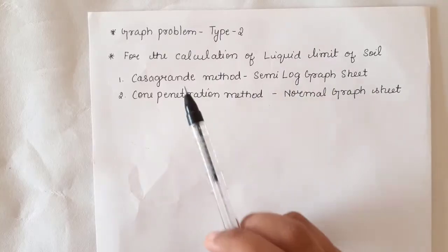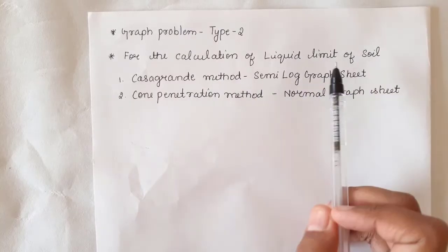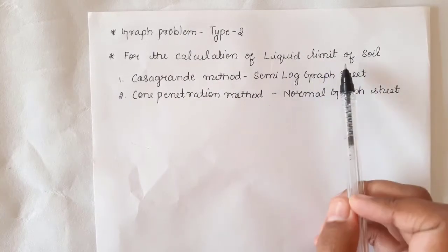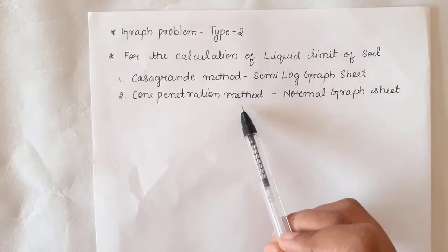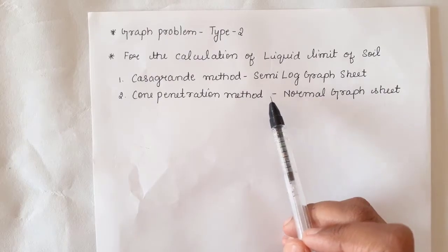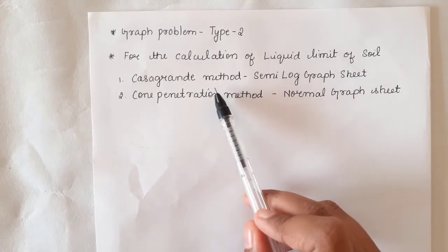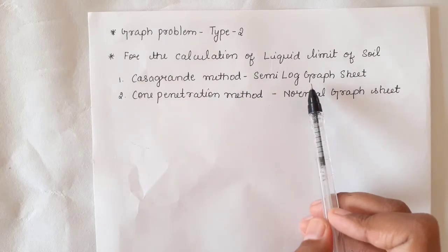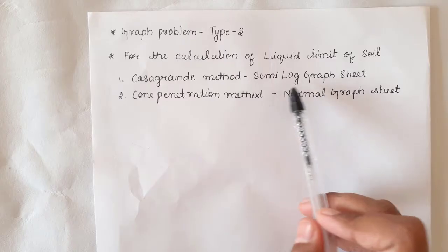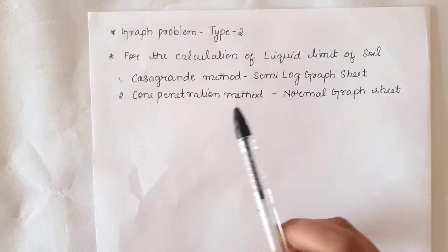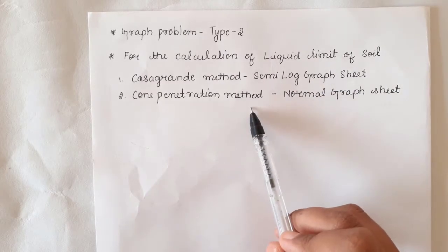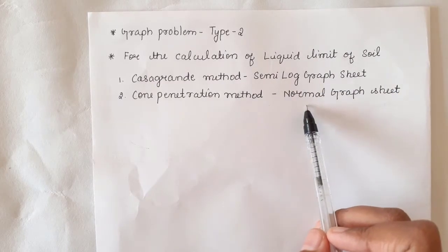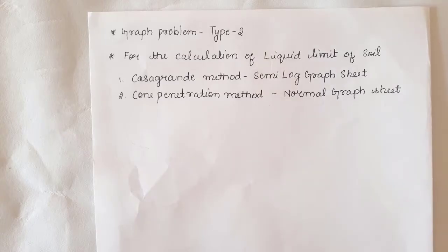The second type is for the calculation of liquid limit of soil. We have two methods: one is the Casagrande method, in which we use a semi-log graph sheet, and another is the cone penetration method, in which we use a normal graph sheet.